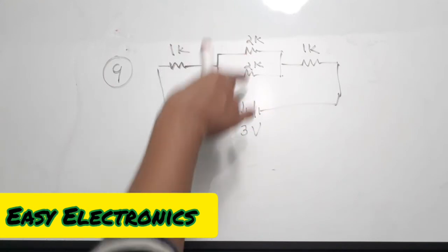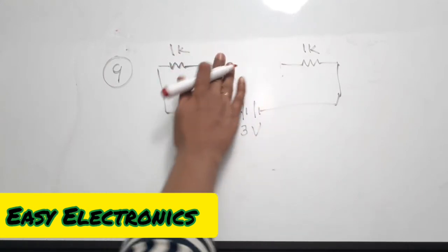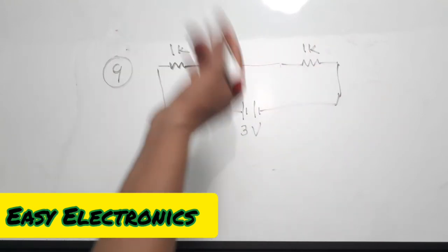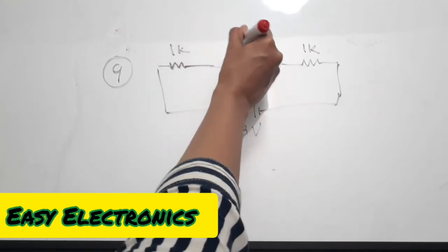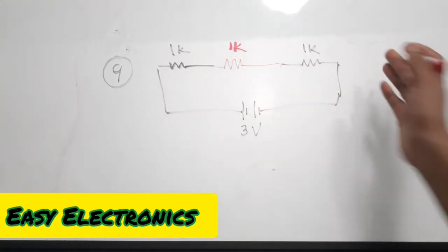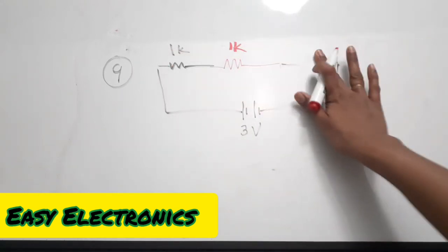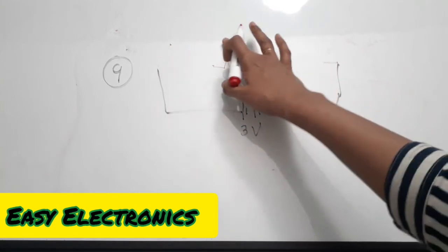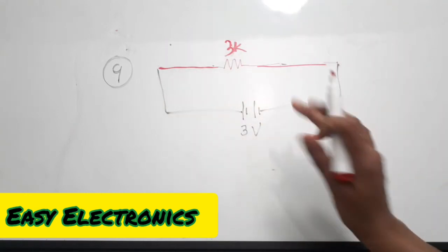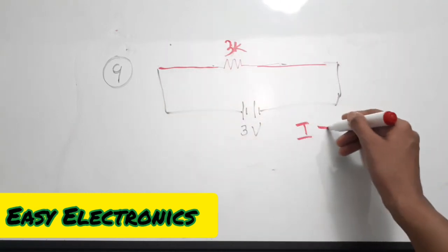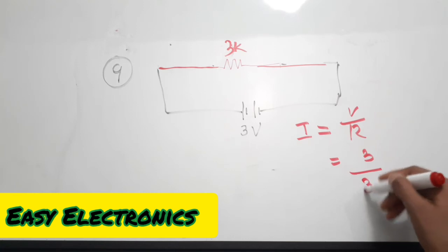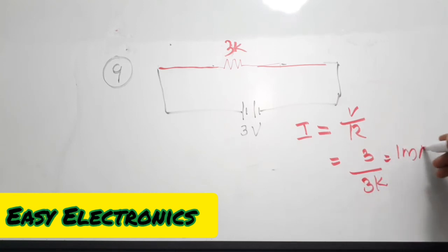There is a 1k and a 1k — wait, the two 2k resistors are in parallel. Applying the parallel equation, two 2k resistors in parallel give a single 1k equivalent. There are now three 1k resistors in series, so the total equivalent resistance is 1 plus 1 plus 1 which is 3k. Finding current is simple: I equals V divided by R, so 3 volts divided by 3k equals 1 milliampere.